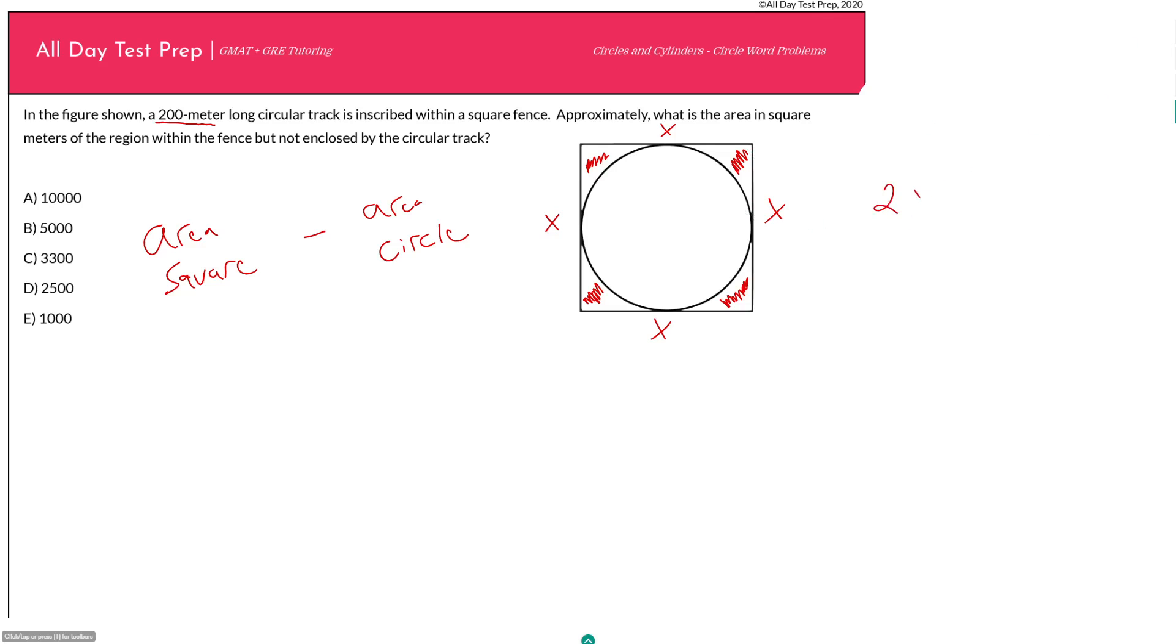That means 2πr for our circle is equal to 200 meters. Therefore we can find the radius of our circle is going to be 200 over 2π, which is just 100 over π.